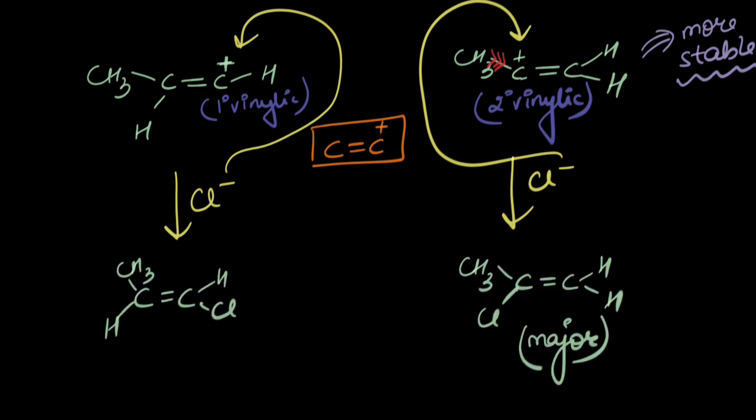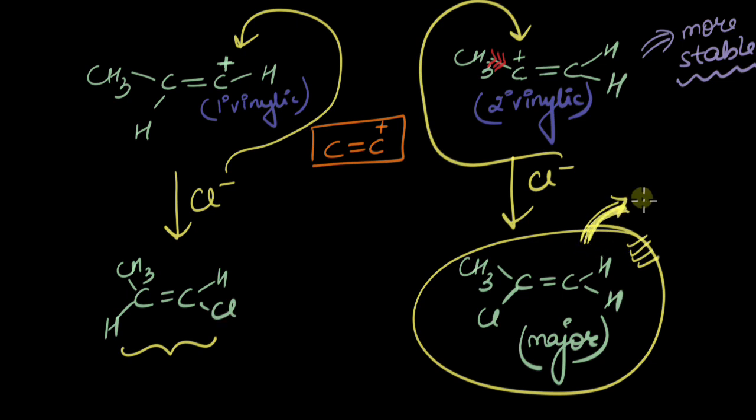We would get the following products where this is the major product. What next? Does the reaction stop? Well, there's excess HCl, so this major one would drive the reaction in its formation. It would form more and more, and this would be a little less. Let's find out what this major product would form once it reacts further.